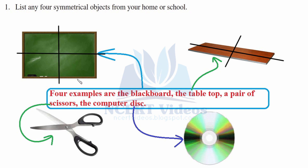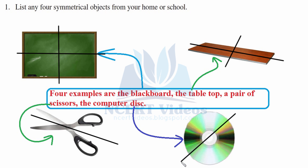A line of symmetry is something where, whenever a mirror image is formed, it produces the other part of the image. The third object is a pair of scissors, and the fourth is a compact disc or CD — on the CD you can draw many lines of symmetry. So these are four symmetrical objects from your home or school.